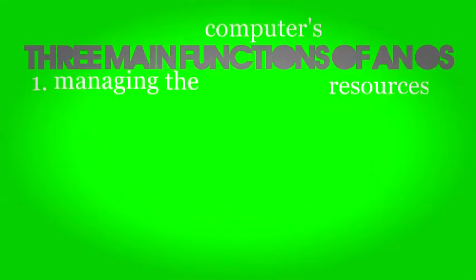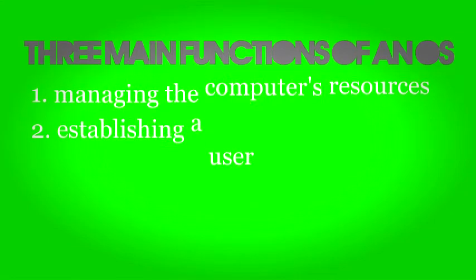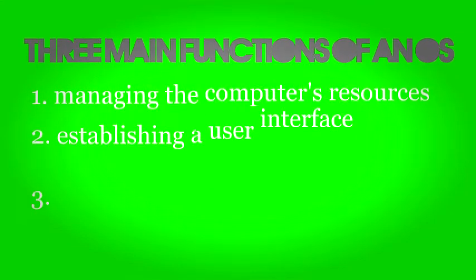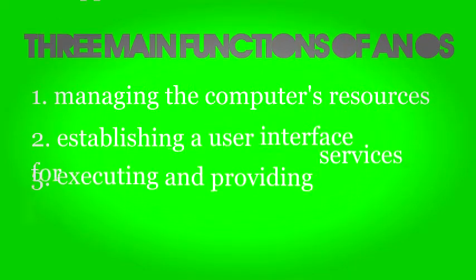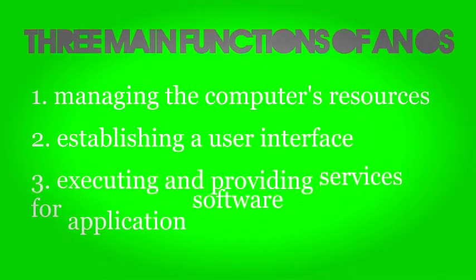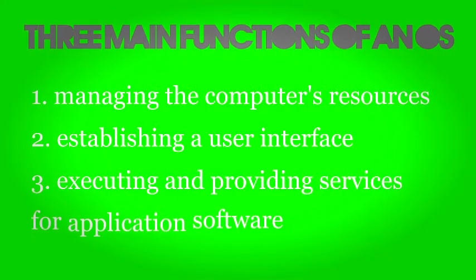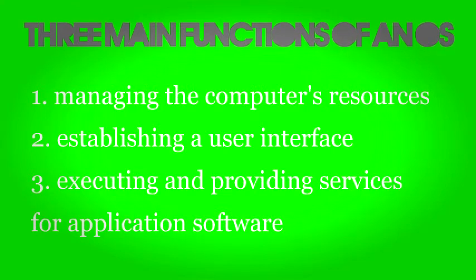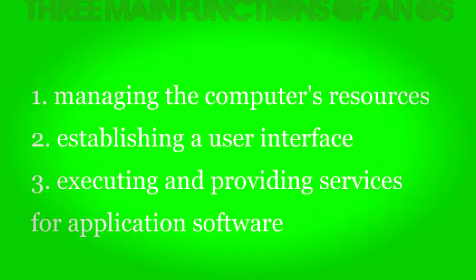An OS has three main functions. It is responsible for managing the computer's resources. It coordinates everything so that when the user needs a certain piece of hardware, it will be ready for usage. It also establishes a user interface — there are two kinds of UI which will be specified. And the OS executes and provides services for application software, serving as the all-important middleman.